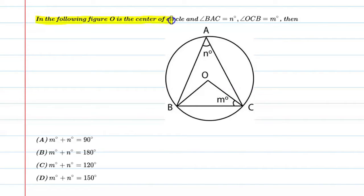In the following figure, O is the center of a circle and angle BAC is equal to n degrees. Angle OCB is equal to m degrees. We have a circle with three points A, B, and C.